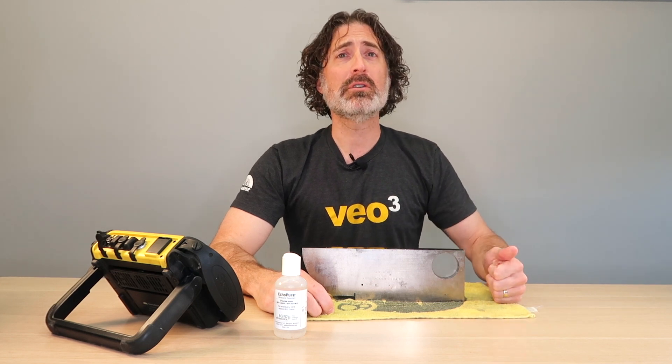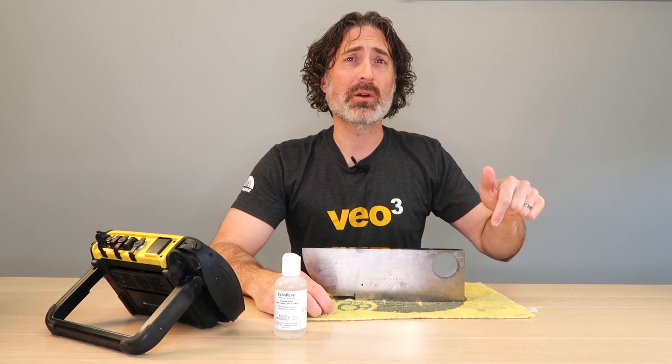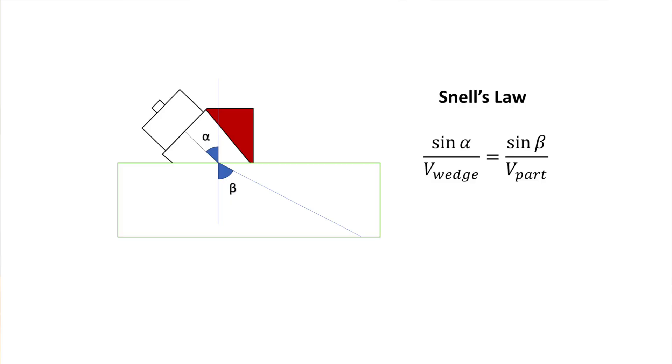If I increase the temperature, my angle is going to go up. If I decrease the temperature, it's going to go down. Let's start with a basic setup. We've got a transducer and wedge on a piece of steel and we're going to use Snell's law. This is the equation that you learned in your UT Level 1 course, and it defines the relationship between the velocities of the wedge and the steel and the angle of incidence and refraction.